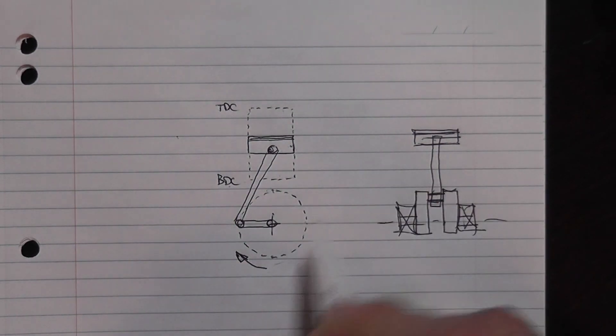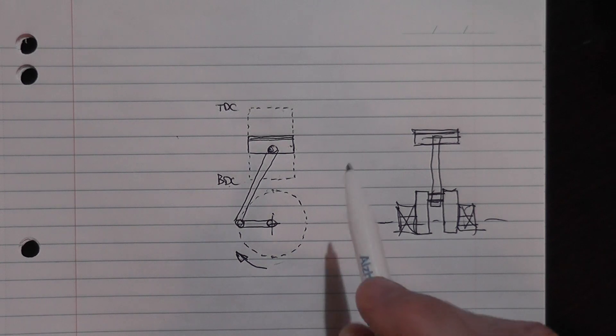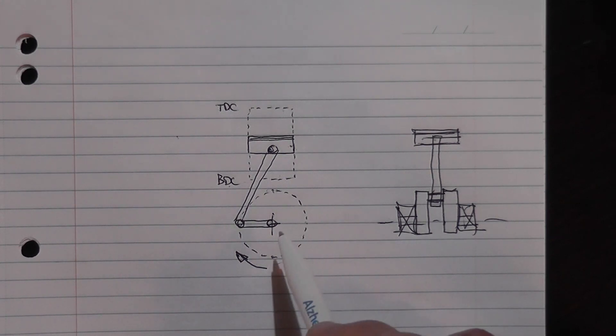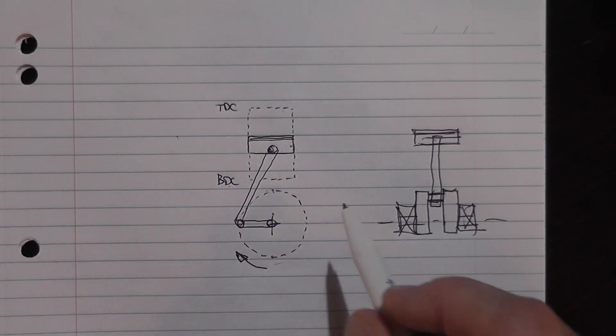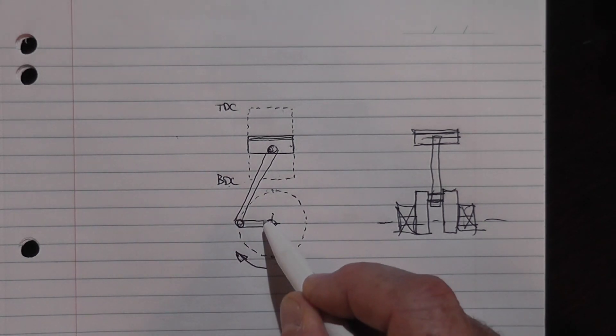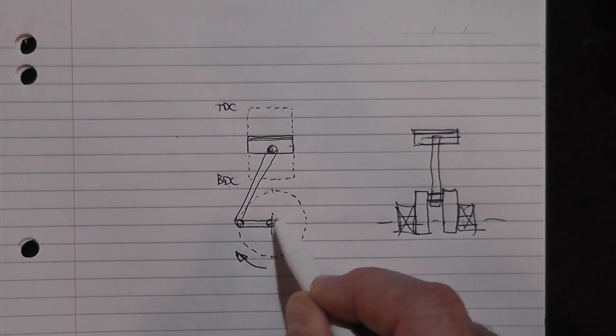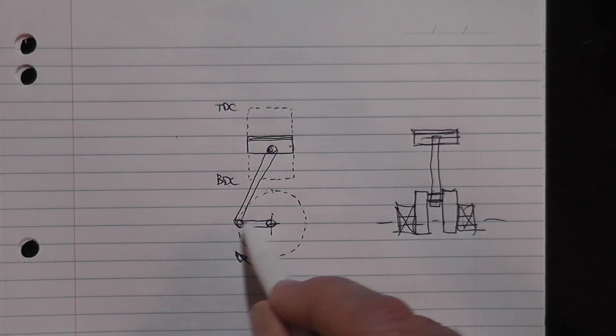So as it's shown there, it's quite an unbalanced arrangement. So what designers like to do to try and improve the balance of this machine is put a counterweight on the opposite side of the crank arm.